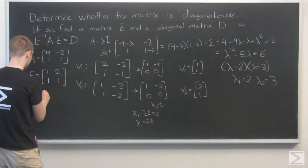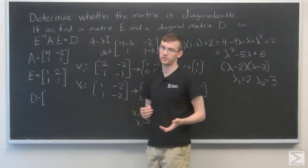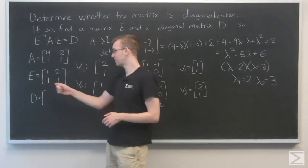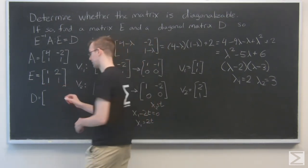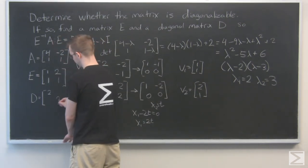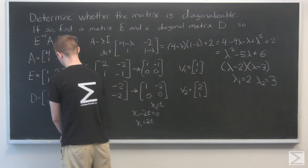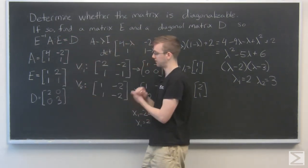And for D, that's just our eigenvalues along a diagonal of an otherwise 0 matrix. The only thing we have to be careful about is that we do them in the same order, because here we did V1, V2, we have to make sure we do lambda 1, lambda 2. So lambda 1 is 2, and lambda 2 is 3. Put zeros there and there.